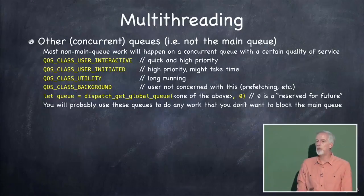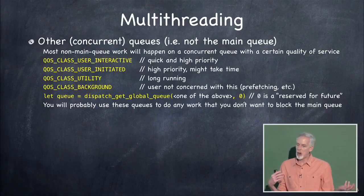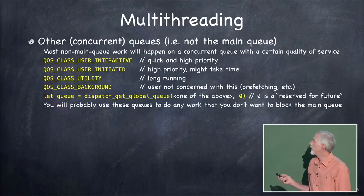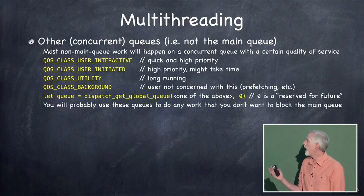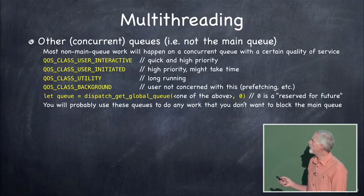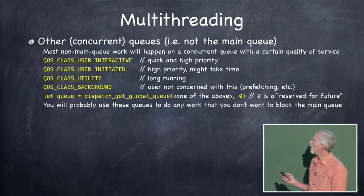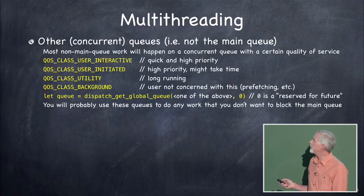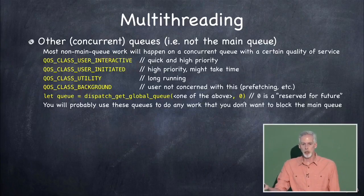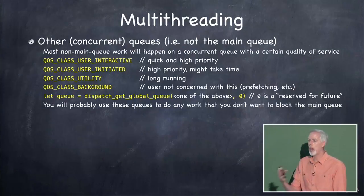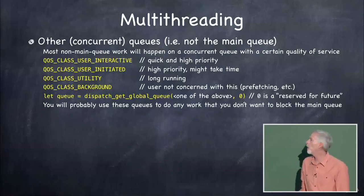Background is even lower priority — it could run today or tomorrow, it's really not something needed right away. It's only going to happen when things are really quiet and nobody wants any other service. You get one of these four queues by calling dispatch_get_global_queue, specifying which one you want, with an extra argument of comma zero which is reserved for future use. That gives you back a dispatch_qt that you use as your first argument to dispatchAsync.